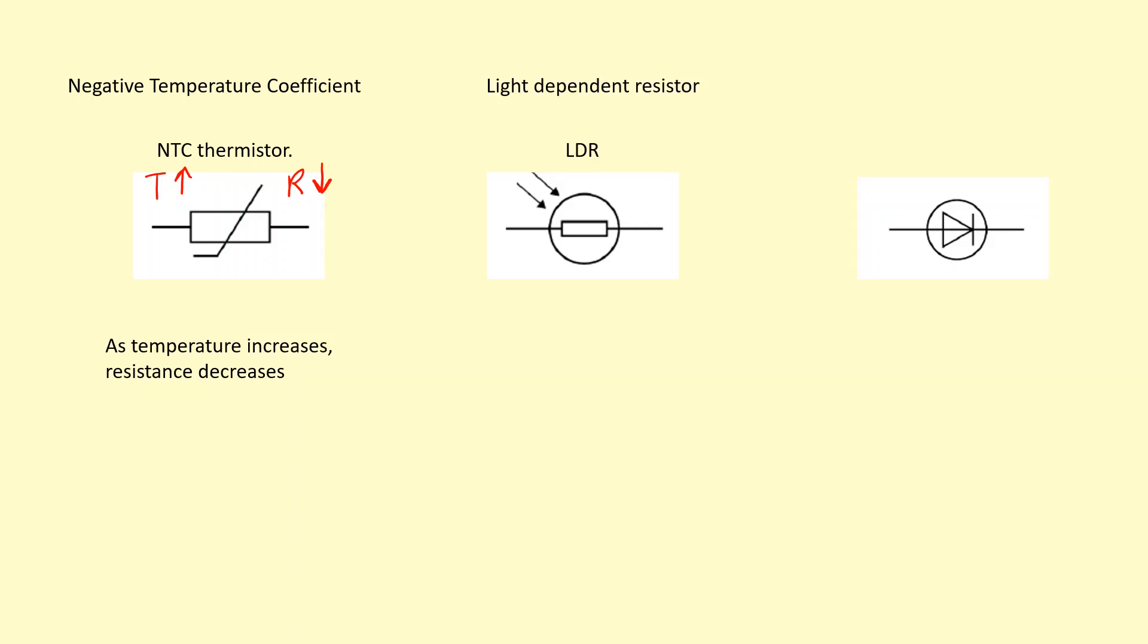Next, we have the LDR, which just stands for light dependent resistor. In this one, as the light intensity goes up, the resistance goes down. It's using light energy to free electrons. When the electrons are free, it means that they can conduct better, so the resistance goes down.